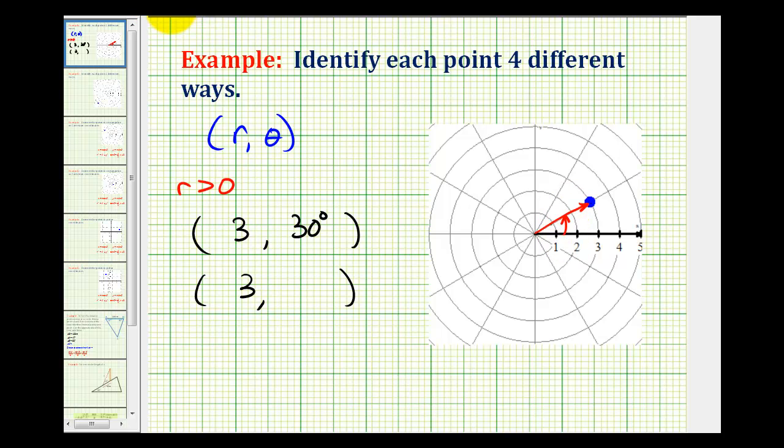Or if we want theta to be negative, we could rotate clockwise here. And this would be negative three hundred thirty degrees or negative eleven pi divided by six radians. Or again, any other negative coterminal angle to this would also be a correct angle for theta.